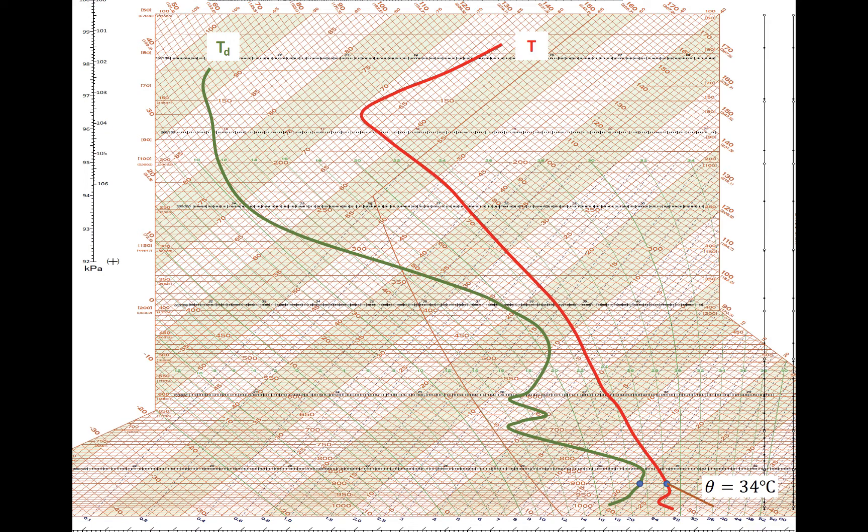Potential temperature is found by simply following the dry adiabat that the temperature profile intersects at 900 millibars down to 1,000 millibars and reading off the temperature. It represents the temperature of dry air after it moves adiabatically up or down to 1,000 millibars. Once you become more familiar with skew-T plots, you can simply read off the temperature corresponding with the appropriate dry adiabat without following the adiabat all the way down to 1,000 millibars.